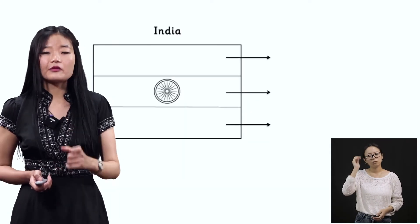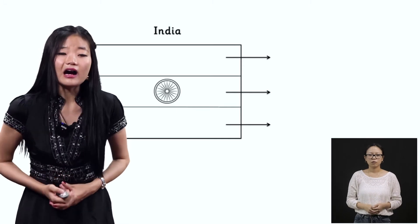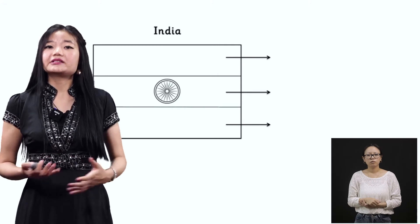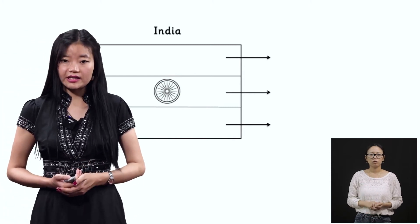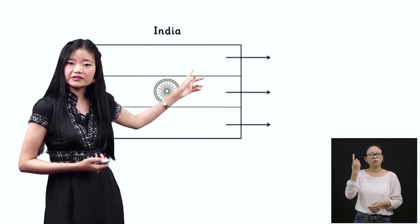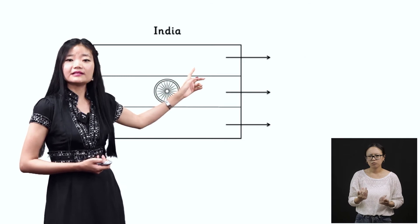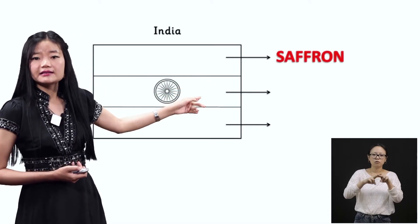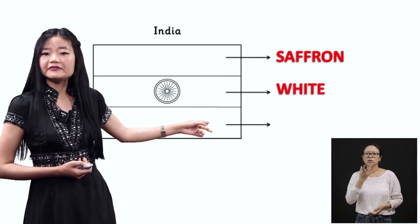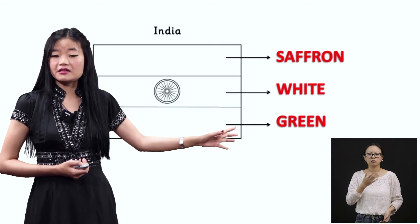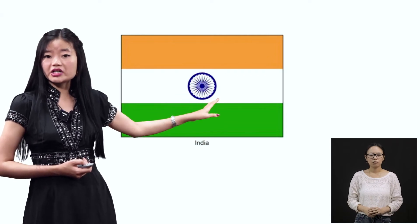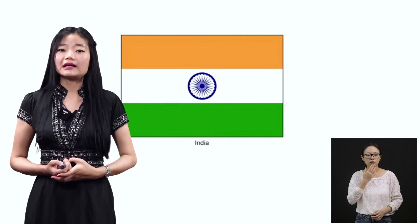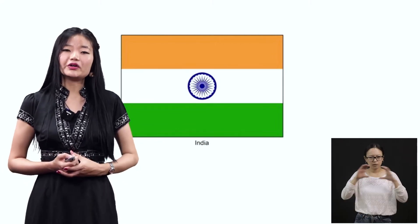After that, we learned about our national flag. I've already explained it to you, so I'm going to give you a worksheet related to the national flag of India. The upper portion of the flag is saffron. The second color is white. And the lower portion of the flag is green. So our flag is a tricolor — saffron, white, and green. Do not forget to color the Ashoka Chakra, which looks like a wheel, and it is blue in color.